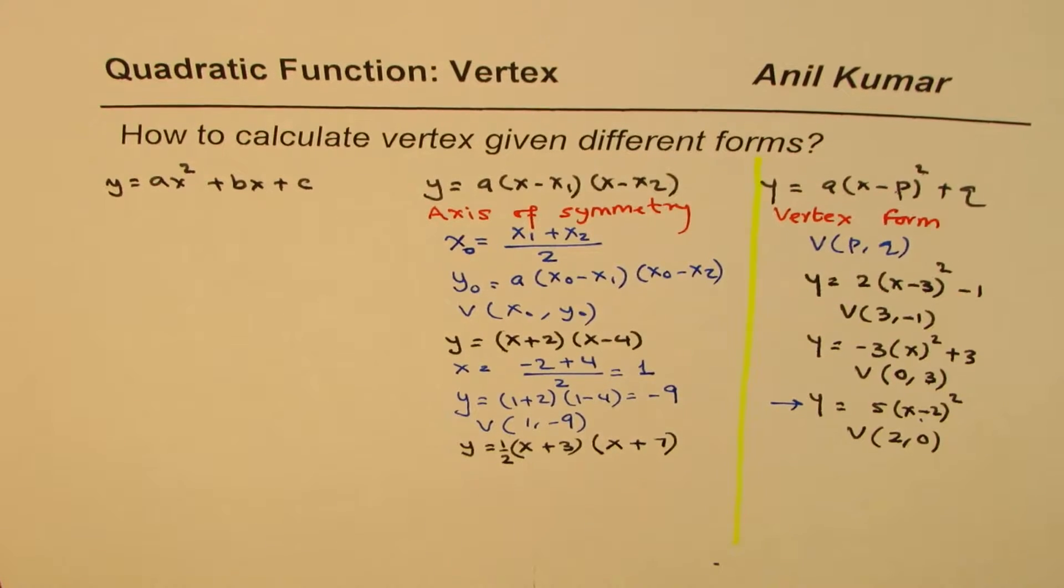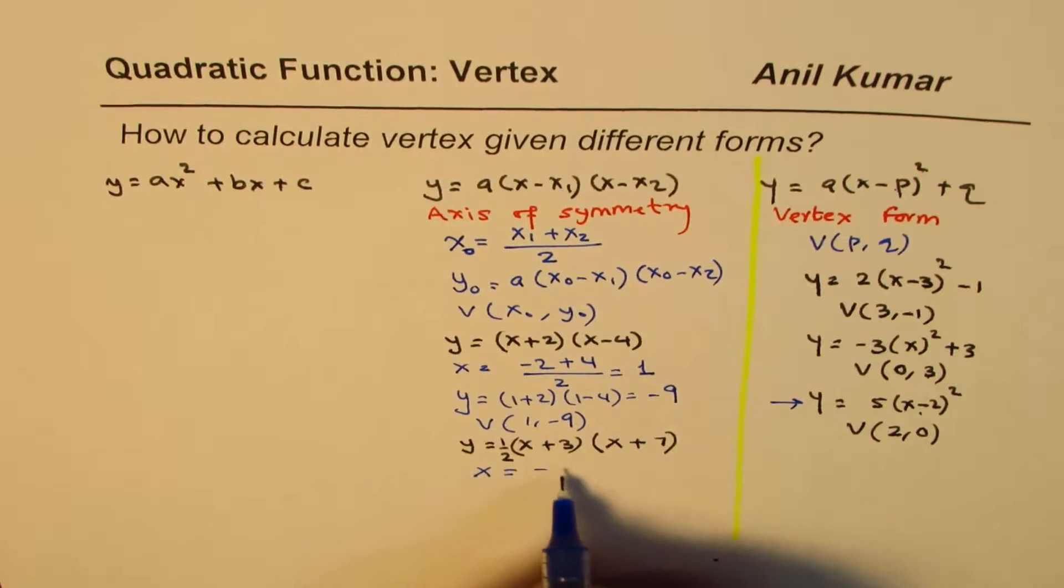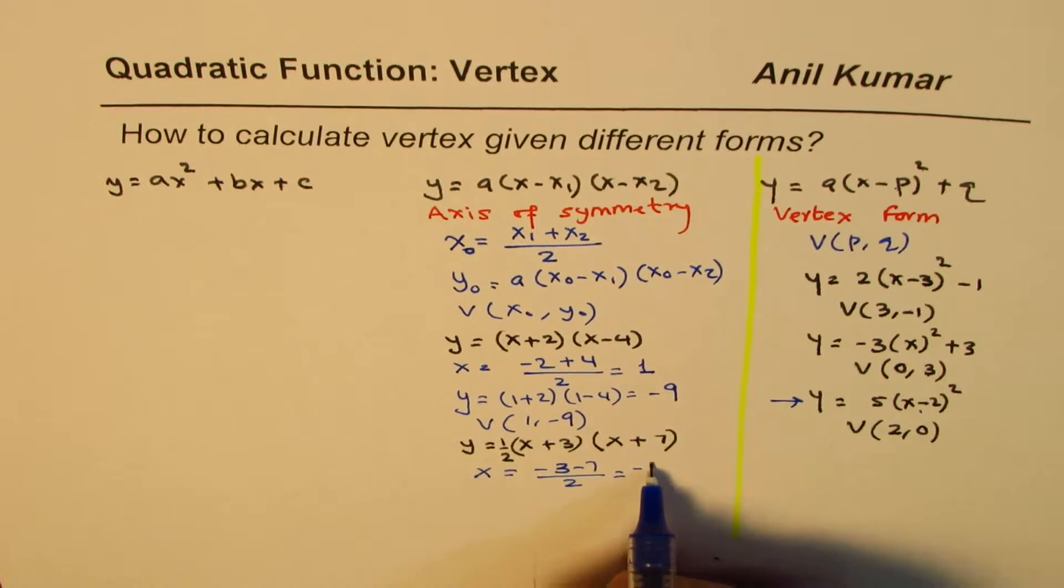Now this is your practice question. You can pause the video, answer the question. Find the axis of symmetry. It is at minus 3 minus 7 over 2, which gives you minus 5.